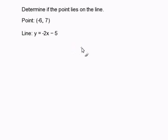I must understand that the ordered pair is written as (x, y). So x is going to represent -6 and y is going to represent 7.